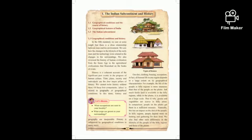Time, place, society, and individuals are the four main pillars of history. Among these, when we talk about place, place is related to geography or geographical conditions. So geography is an inseparable part of history.